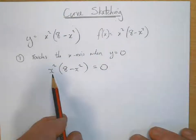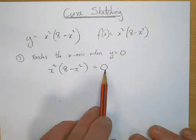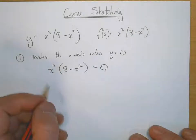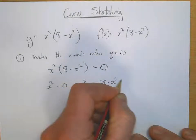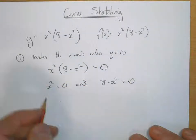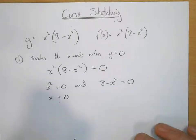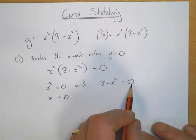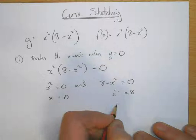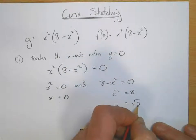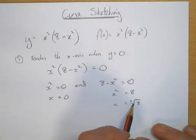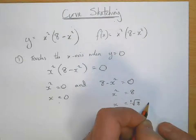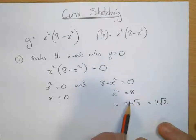There are two times this would equal 0: when x squared equals 0, or when 8 minus x squared equals 0. So x squared equals 0 gives us x equals 0, and 8 minus x squared equals 0 gives us x squared equals 8, which means x equals plus or minus the square root of 8. You could simplify that to 2 root 2, but you might as well just leave it like that — there's no need to convert it to a decimal.